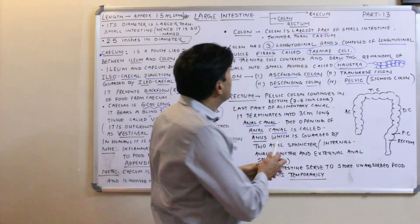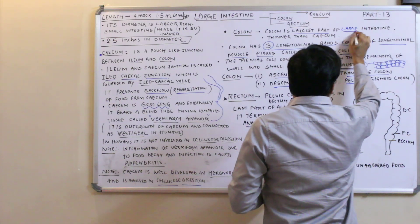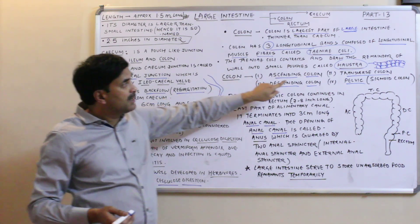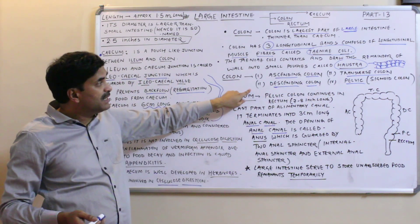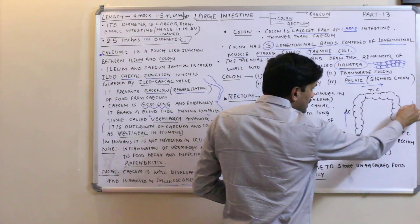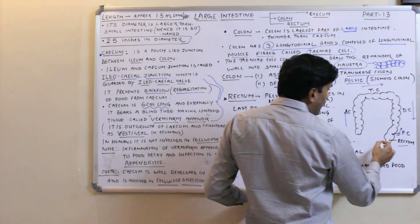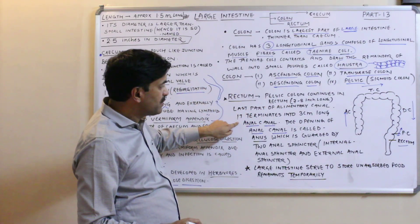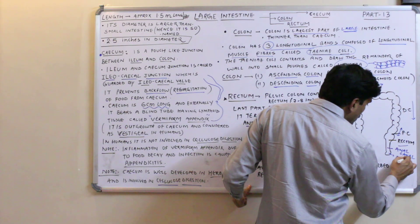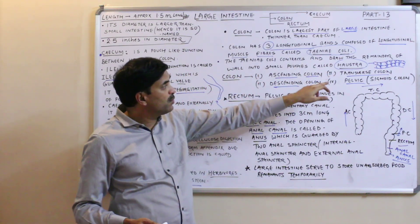The colon is the largest and most developed part of the large intestine. It has four parts: ascending colon, transverse colon, descending colon, and pelvic colon. The pelvic colon opens into the rectum.